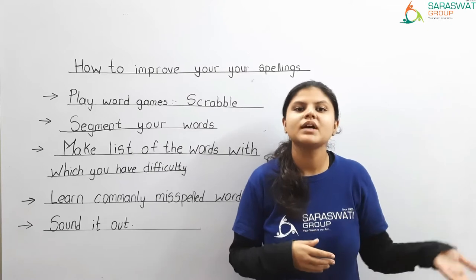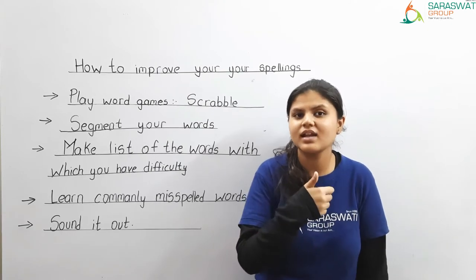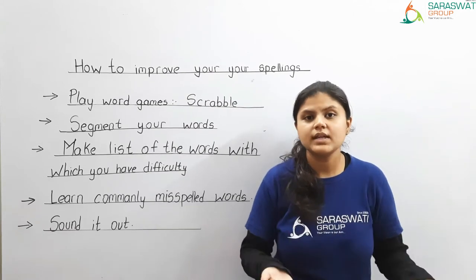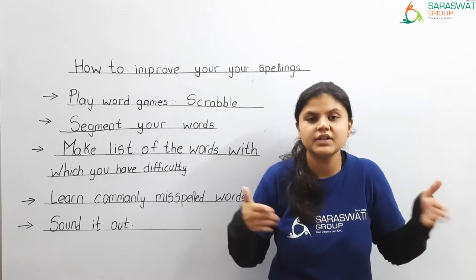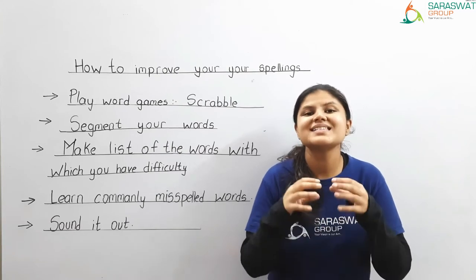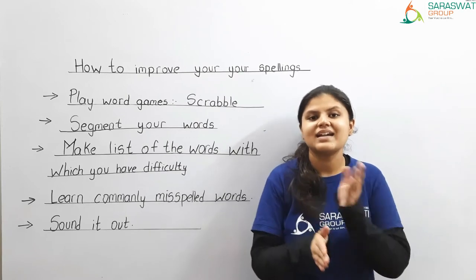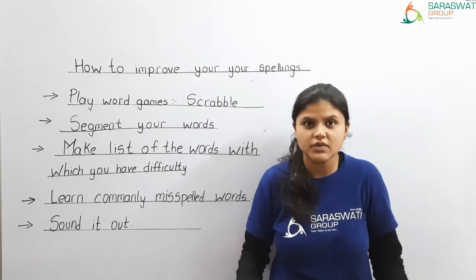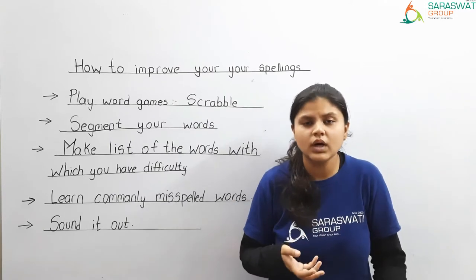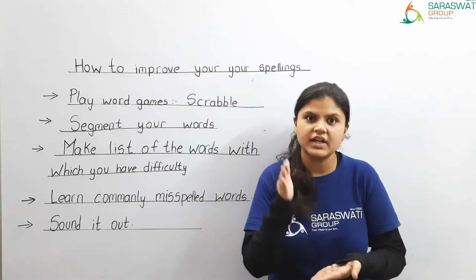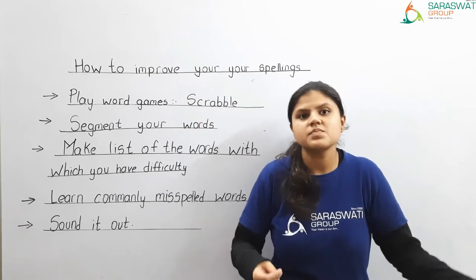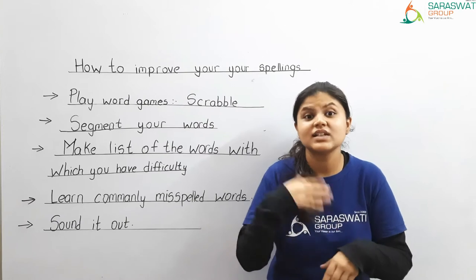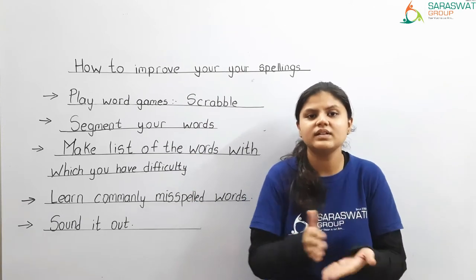Then the second technique is: segment your words. Segmenting means cutting it into different groups — bifurcate, cut. For example, C-A-T makes CAT. That is segmenting — dividing each word into parts. So if you are not able to spell out a word, what you can do is segment the word into different pieces, then put it all together by segmenting it and blending it.